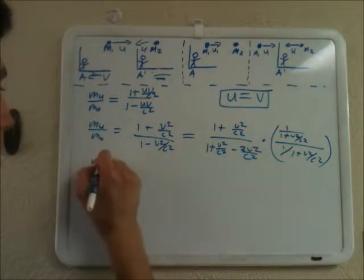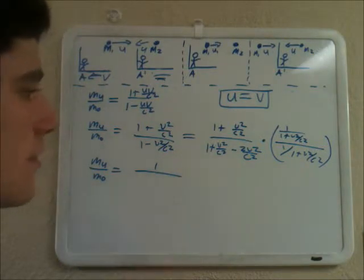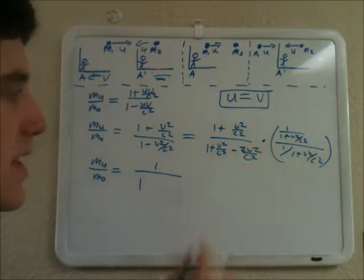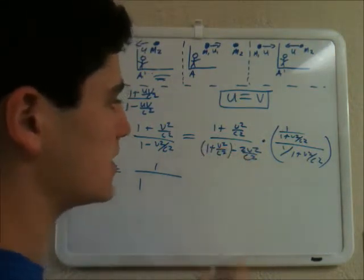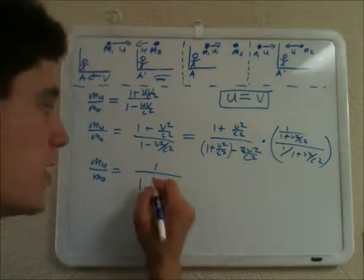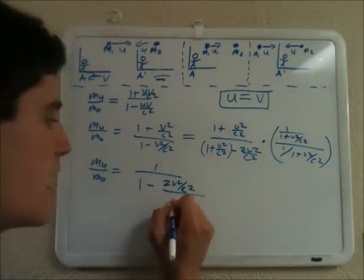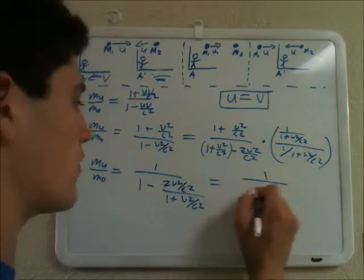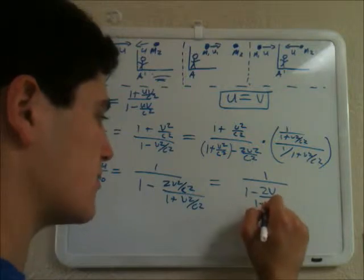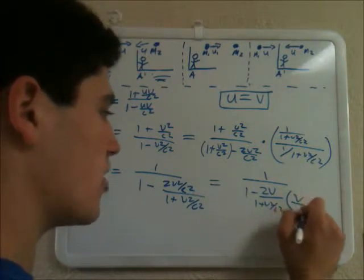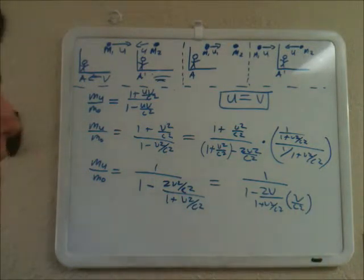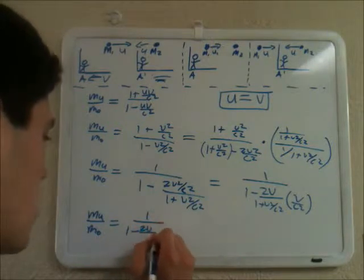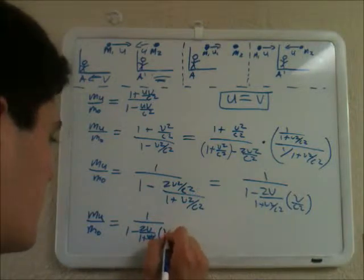When I distribute this all to the top, I get mu over m0 equals 1 over — distributing to the 1 plus v squared over c squared part — I get 1, and then this to the negative 2v squared over c squared. So I get 1 minus 2v squared over c squared divided by 1 plus v squared over c squared. And now I'm going to rewrite that as 1 over 1 minus 2v over 1 plus v squared over c squared, multiplied by v over c squared. So mu over m0 equals 1 over 1 minus 2v over 1 plus v squared over c squared, multiplied by v over c squared.